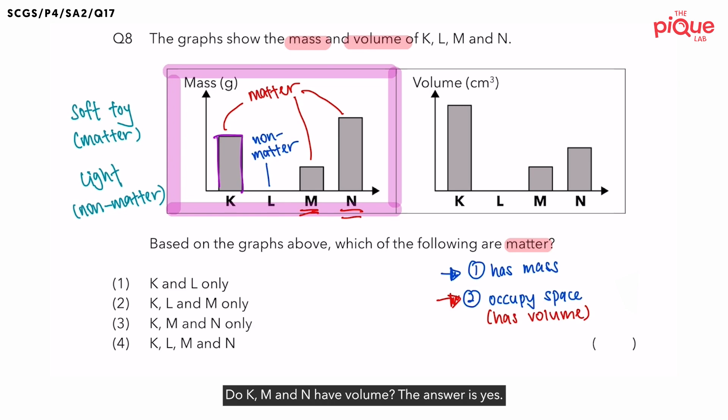The answer is yes. This helps us to double confirm that K, M and N, they must be matter since they have both mass and volume.